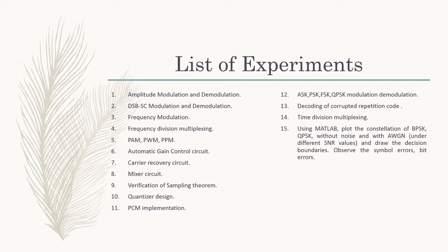The 15th experiment is using MATLAB to plot the constellation of BPSK and QPSK without noise and with additive white Gaussian noise under different signal-to-noise ratio values, draw the decision boundaries, and observe the symbol errors and bit errors.